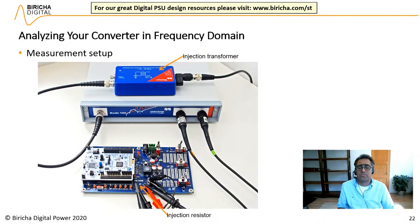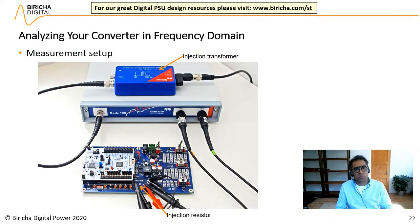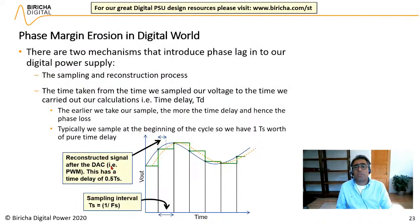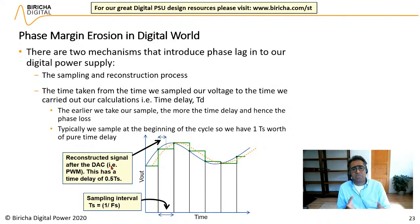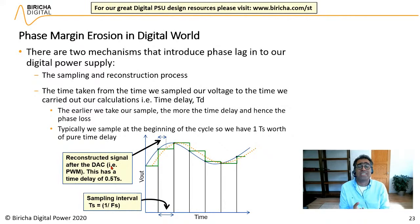This is the lab setup used in the workshop — a buck converter board that we design in the workshop, plus the STM32 microprocessor card that plugs in. All measurements are made with the Bode 100 instrument and oscilloscopes. Compared to analog, there is phase erosion in the digital world due to two processes: sampling and reconstruction, and the time delay from when you sample the voltage to when you update the PWM. Both introduce a pure time delay into the transfer function, which translates into phase loss.